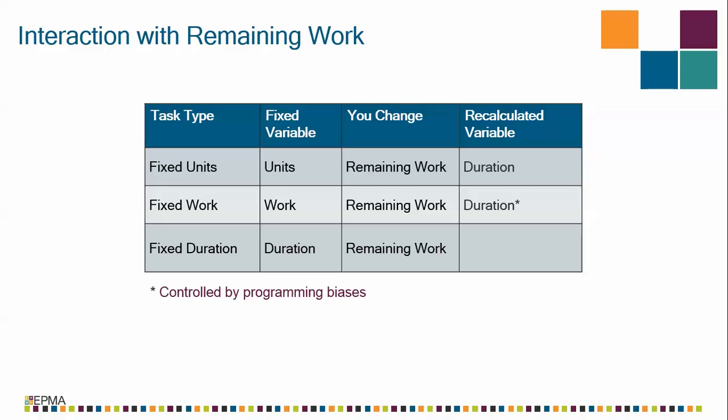Your third situation is a fixed duration task. On a fixed duration task, the duration is locked. But if you change the remaining work, you're actually changing the work. So on a fixed duration task, the duration is locked; if you change remaining work, you're changing work. So what number has to be recalculated? The answer is units. Why? It's the only number left.